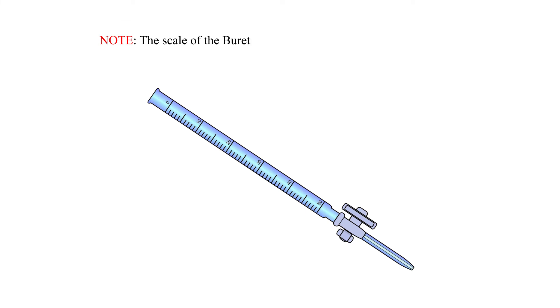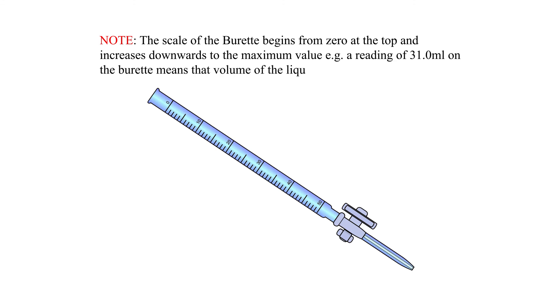Note, the scale of the burette begins from 0 at the top and increases downwards to the maximum value, e.g., a reading of 31.0 ml on the burette means that volume of the liquid is 50 minus 31 ml, equals 19 ml.